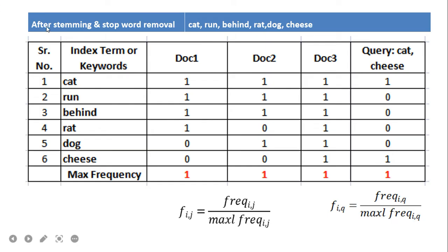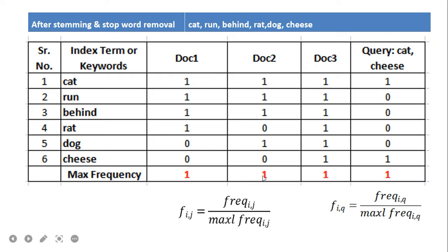After stemming and stop word removal, the keywords are: cat, run, behind, rat, dog, and cheese — six keywords total. We need to calculate the maximum frequency of these keywords in each document to normalize via the intra-cluster formula. Checking each keyword's count per document, the maximum frequency in each document is 1, so dividing by 1 makes no change — the values are already normalized between 0 and 1.